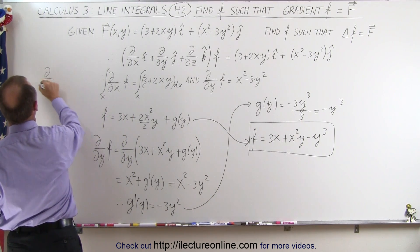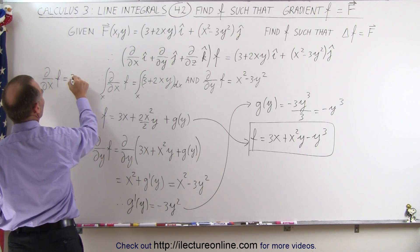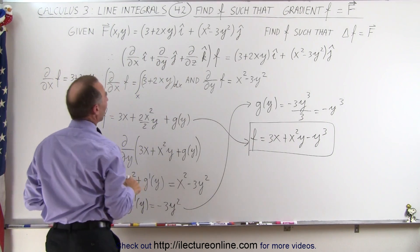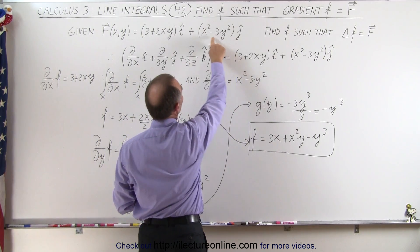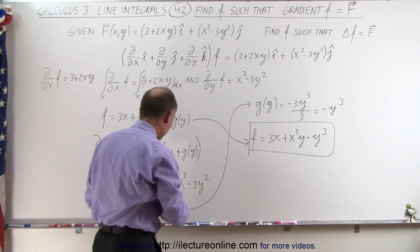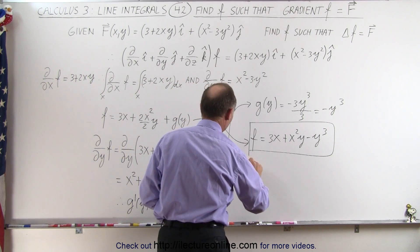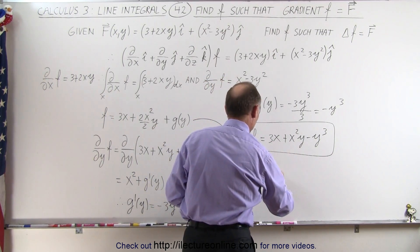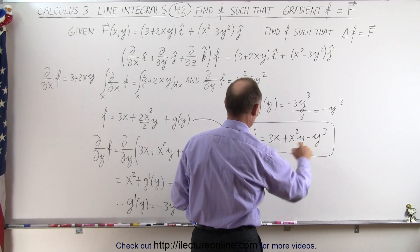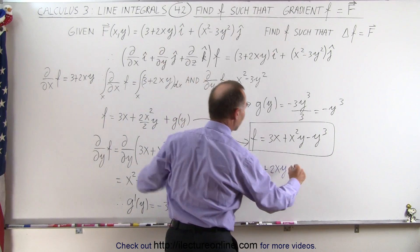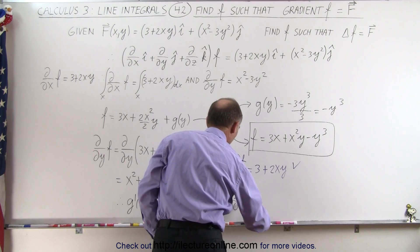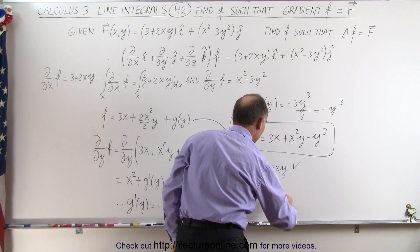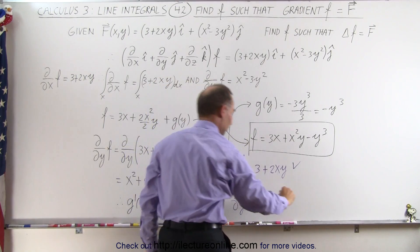To make sure we got the right answer, let's verify. The partial derivative with respect to x of f is equal to 3 plus 2xy, which matches the x-component of the vector field. The partial derivative with respect to y of f: the 3x term goes to zero, x squared y gives x squared, and negative y cubed gives negative 3y squared — which matches the y-component. So the answer is verified.